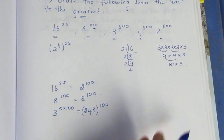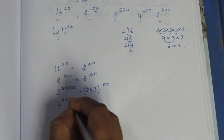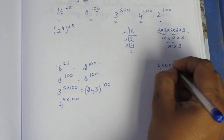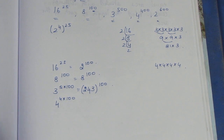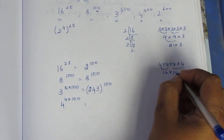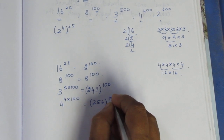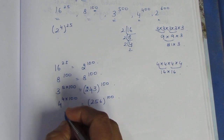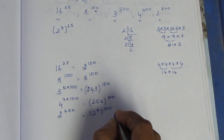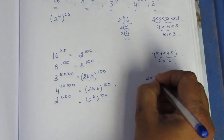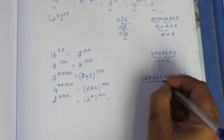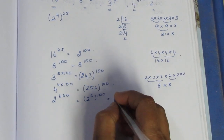Next is 4 power 400. We write 400 as 4 times 100, so 4 power 400 is 4 power 4, whole power 100. Now 4 to the power 4 is 4 times 4 times 4 times 4 — that gives 256. And 2 power 600 is 2 times 2 times 2 times 2 times 2 times 2, which is 64. So 2 power 600 equals 64 power 100.